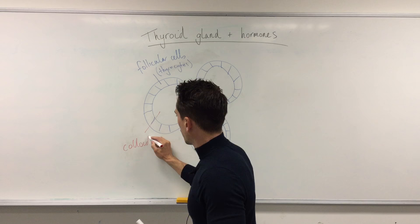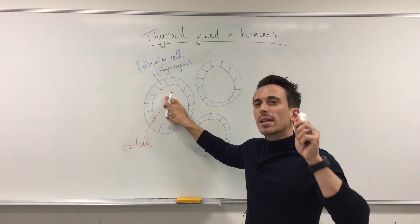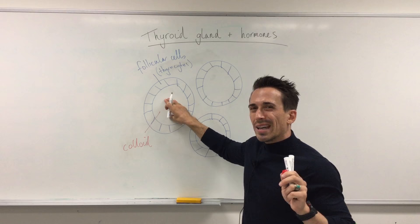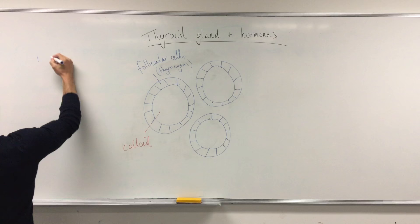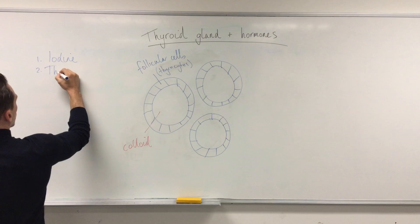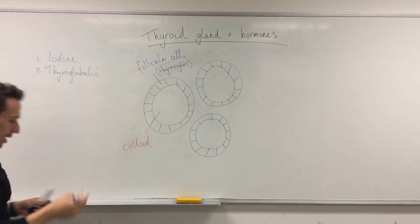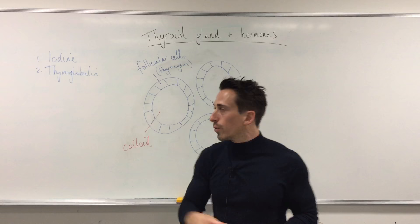It's within this colloid that we produce thyroid hormone, but we need two major things to come together here. The first thing you need is iodine. The second thing you need is thyroglobulin. So you need iodine and thyroglobulin to come together in this colloid to produce thyroid hormone.